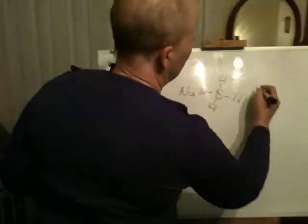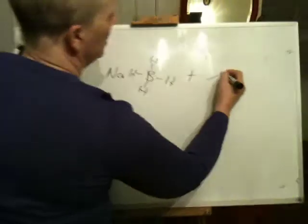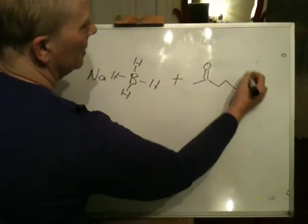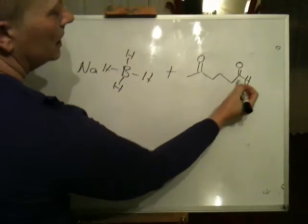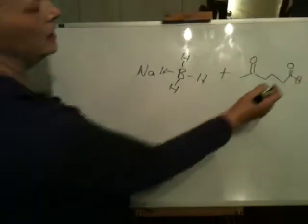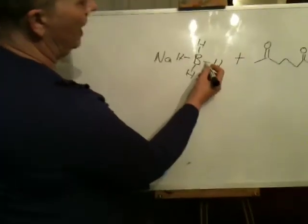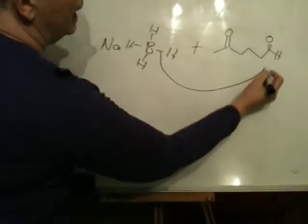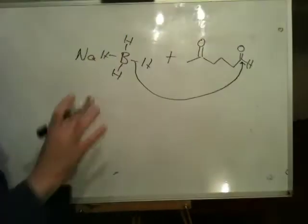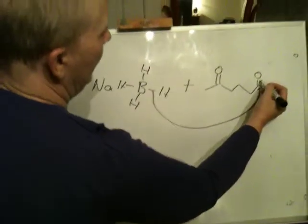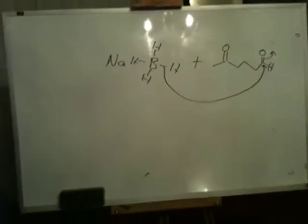So for example, if I was adding this to this, this group, being the aldehyde, is more reactive than the ketone. So what you would expect is for the hydride to add to this selectively. So if you kept your conditions mild enough, you could add to this selectively and break that bond.